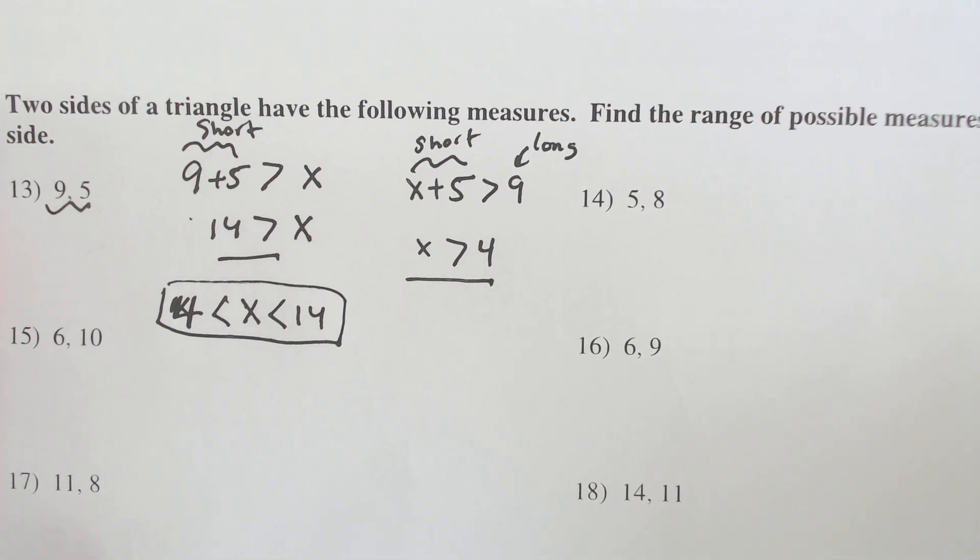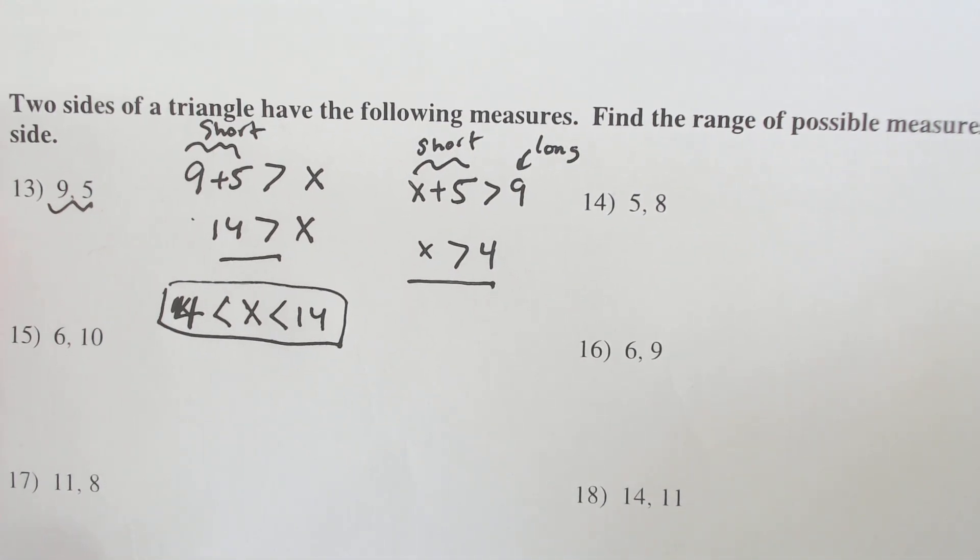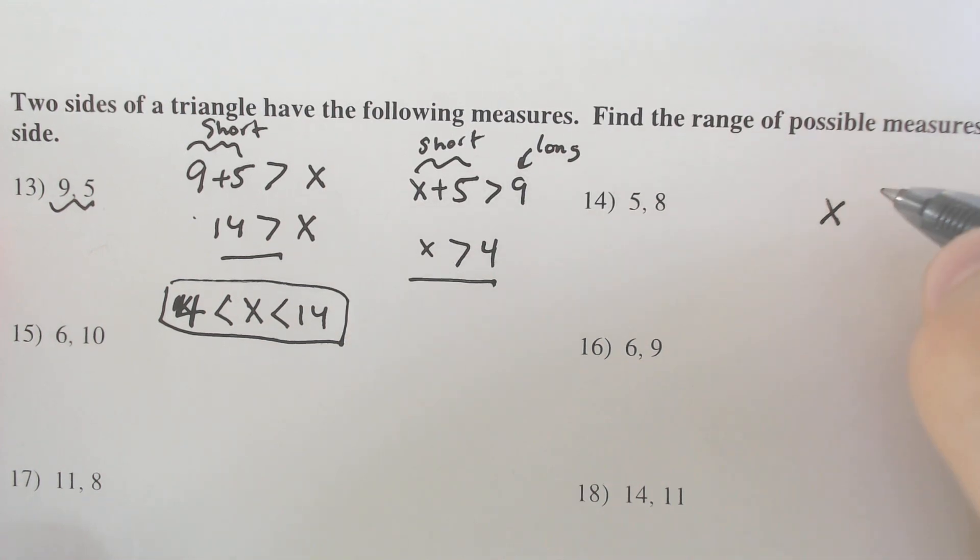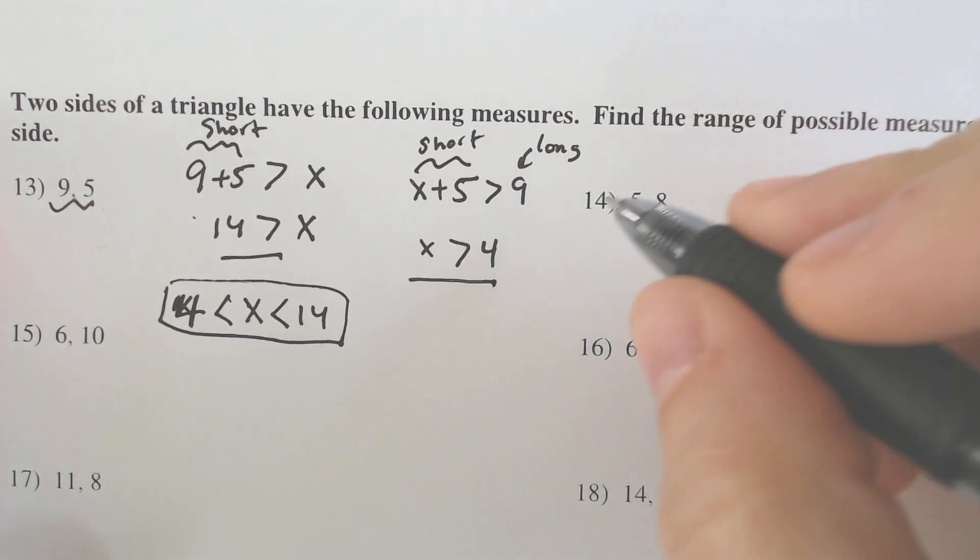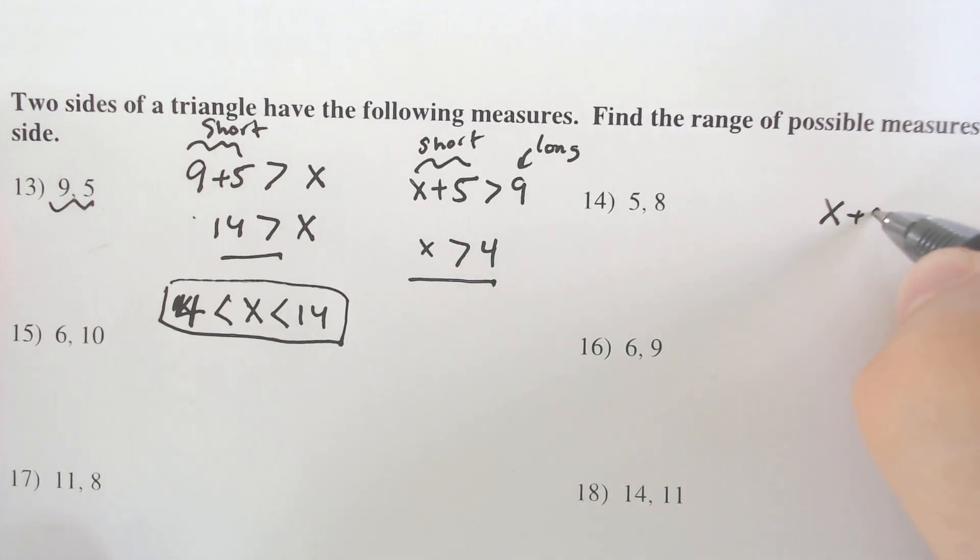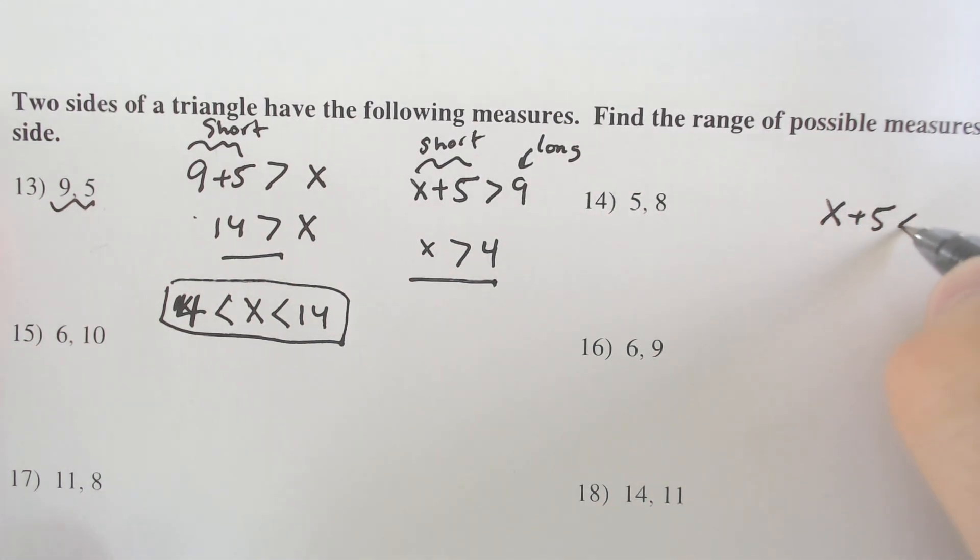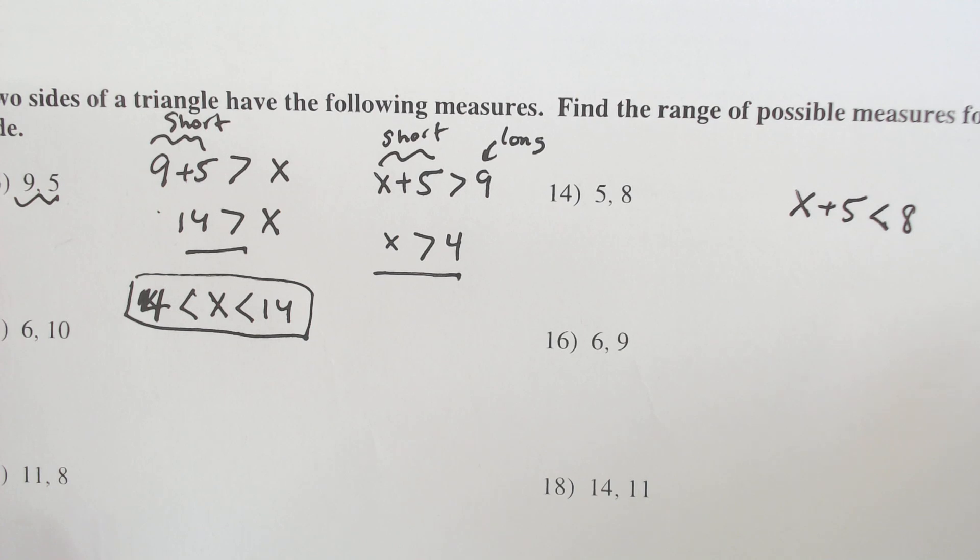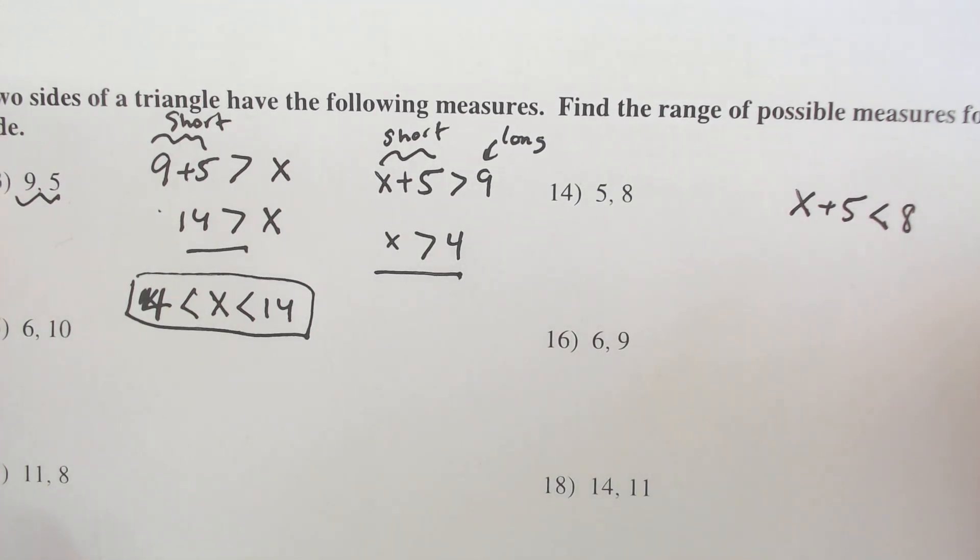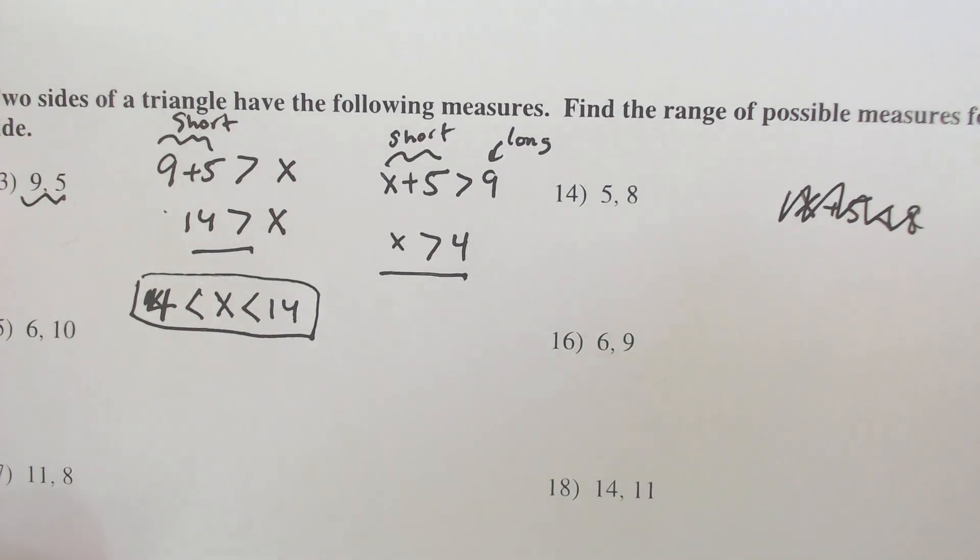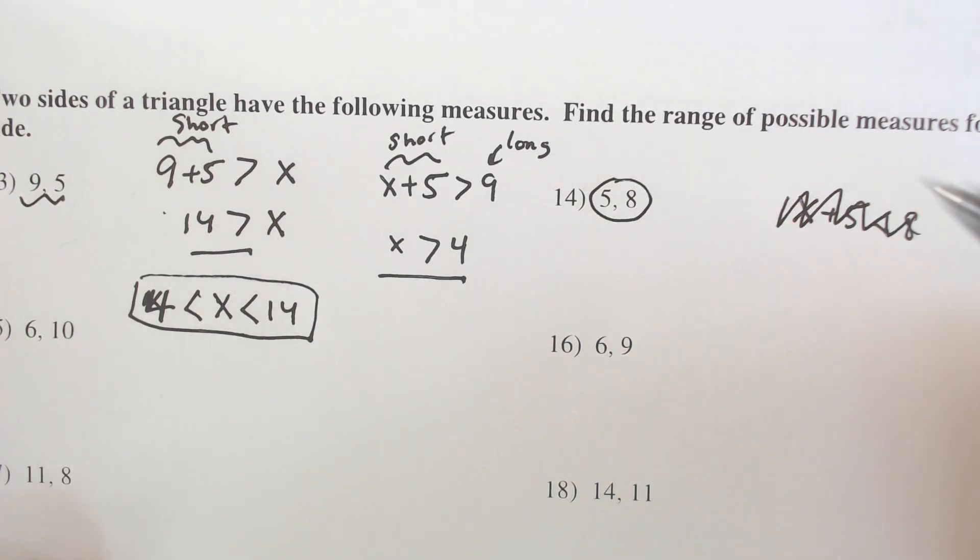Now, there are other ways that you could go about it. You could literally say X and, in this case, if we pretend that 5 is one of the shorter sides, X plus 5 has to be smaller than 8. Excuse me. Oh, I messed myself up. I'm just going to restart it. I tried doing a trick. Didn't seem like it was going to work. So let's just say that these two are the shorter sides.